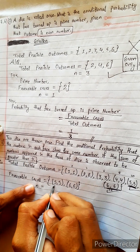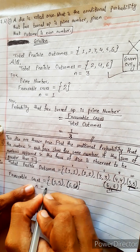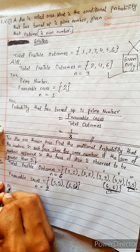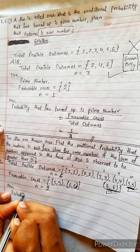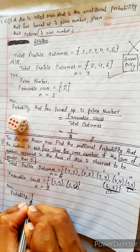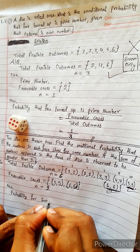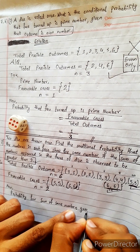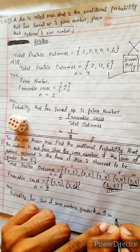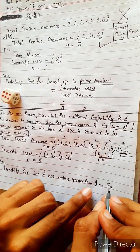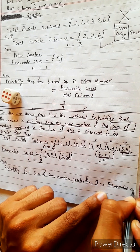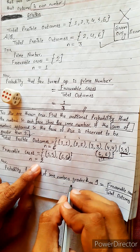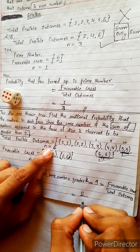Now, its cardinal number — how many elements are here? This is one element, this is another element, so there are total two elements. And in total there are six elements. So now, probability for sum of same face numbers greater than nine equals to — the formula is favorable cases divided by total outcomes. Favorable cases: two. Total: six. Two by six equals one by three. Very simple.